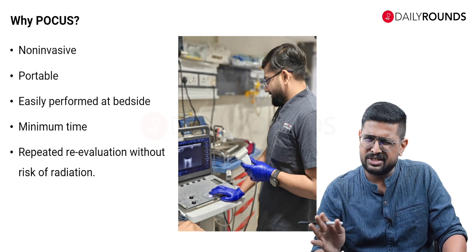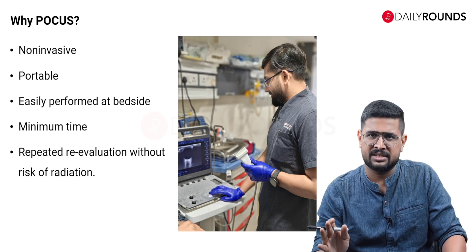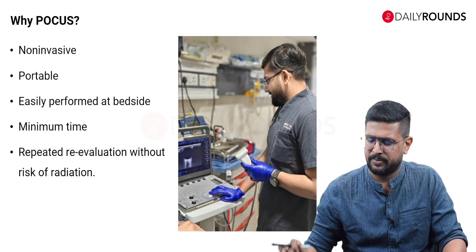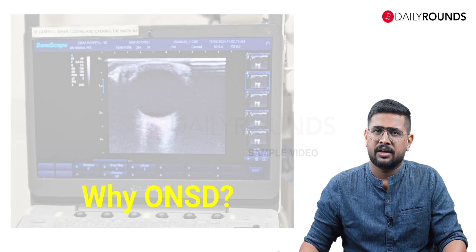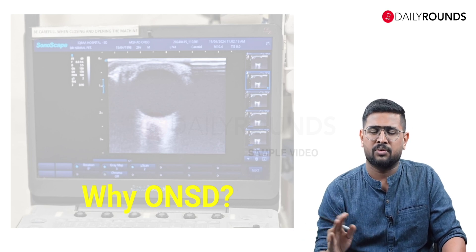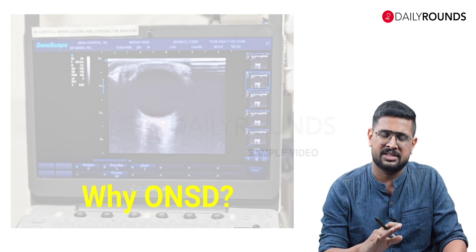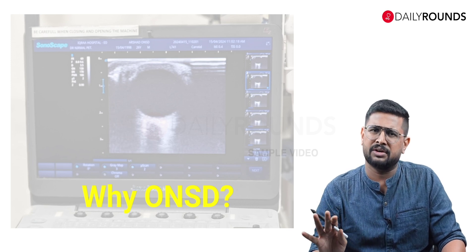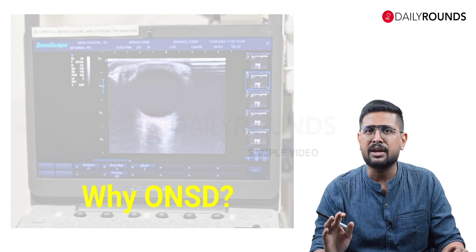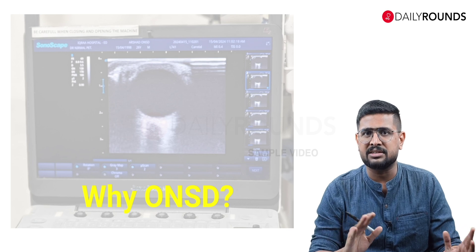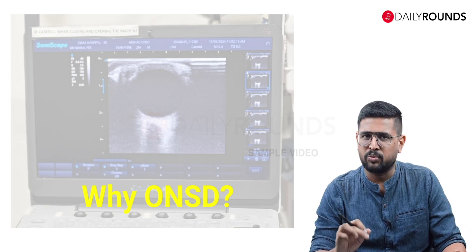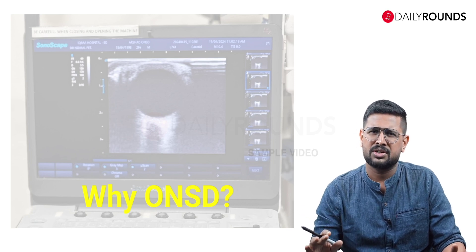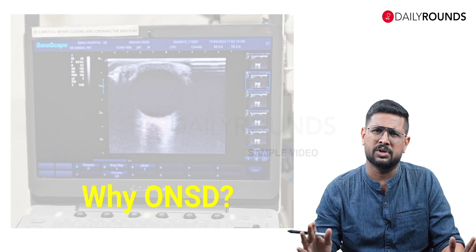There is no significant risk of radiation, and you can complete the whole procedure in minimum time. Now the question is: why are we looking at optic nerve sheath diameter? We are concerned about raised intracranial pressure, but what we are measuring here is an extracranial optic nerve sheath diameter. So how does that work?